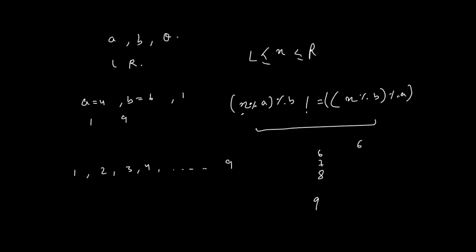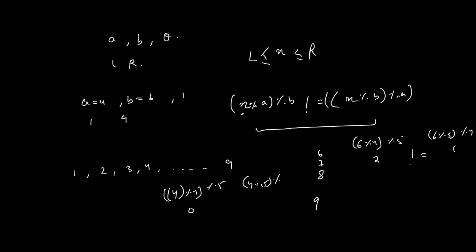If you take 6: 6 mod 4 mod 5 gives you 2, and 6 mod 5 mod 4 gives you 1 — so they are not equal. On the other hand, if you take 4: 4 mod 4 mod 5 gives you 0, and 4 mod 5 mod 4 also gives 0 — so these are equal and 4 cannot be taken. So the valid values are 6, 7, 8, 9, giving a total count of 4 as the answer.